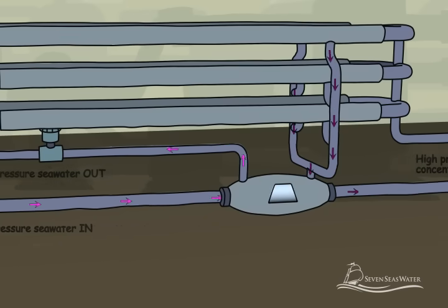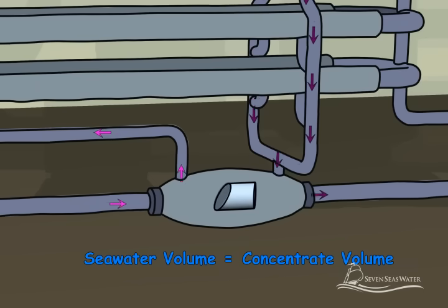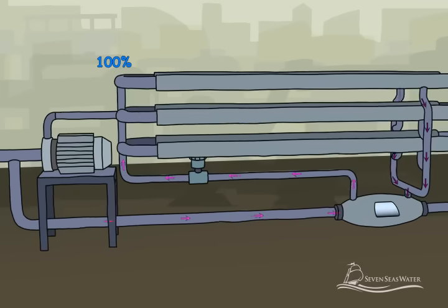Here, up to 98% of the energy of the concentrated salt stream is transferred to an equal volume of the incoming seawater in an isobaric energy recovery device. The energy recovery device significantly reduces the plant's operating costs by recovering the concentrated salt stream energy and using it to pressurize 60% of the seawater that is fed to the membranes.